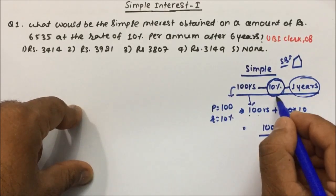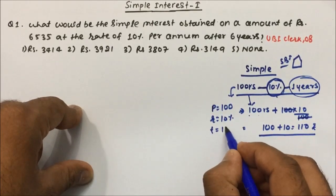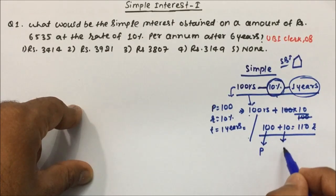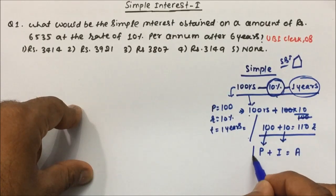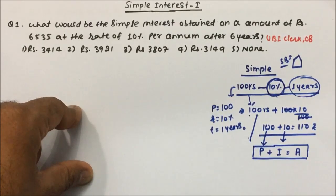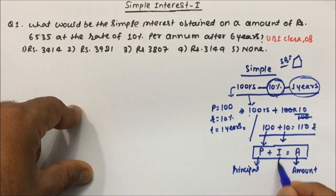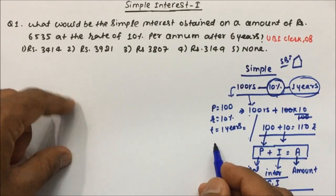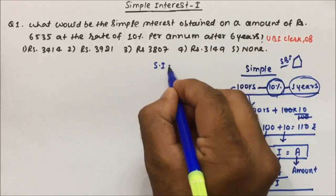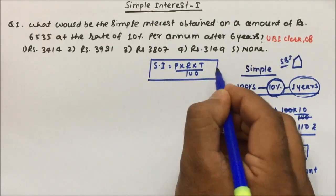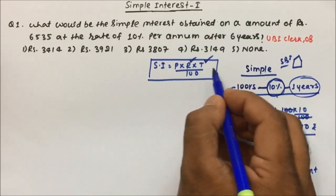Whatever money you invest — here 100 rupees — that becomes your principal. The rate is 10% per year, and the time is one year. After one year, the bank gives you 100 rupees (principal) plus 10 rupees (interest), and the total is your amount. The formula for simple interest is: SI = (P × R × T) / 100, where P is principal, R is rate, and T is time.